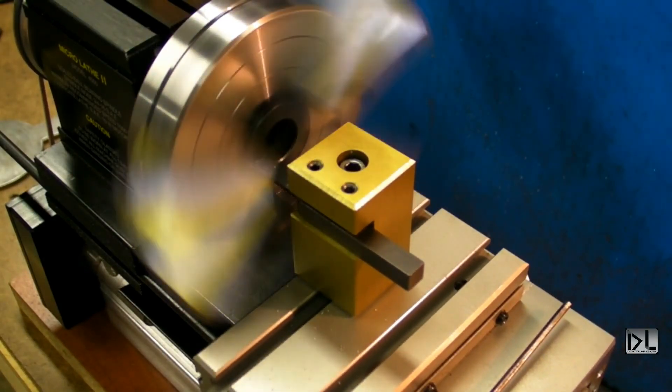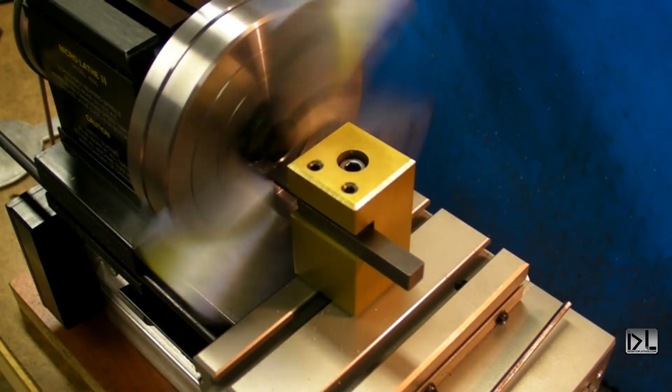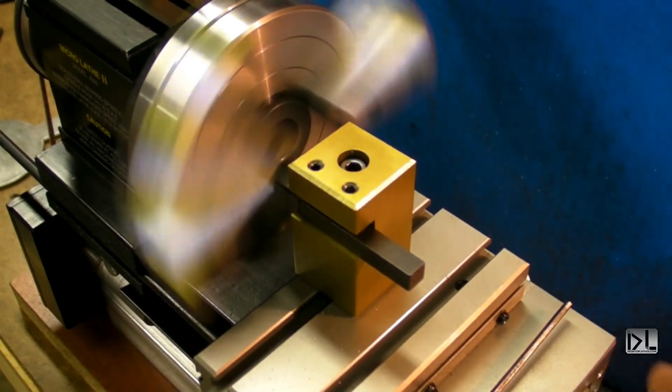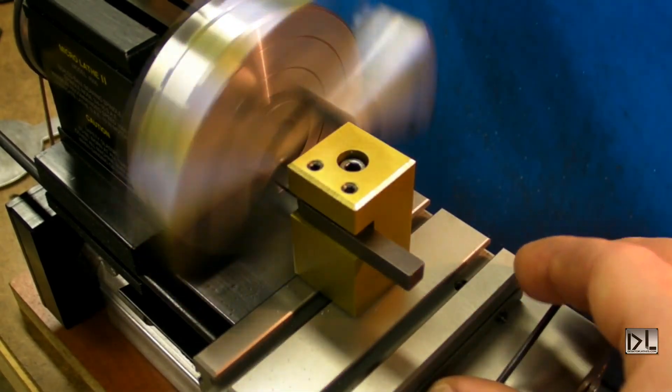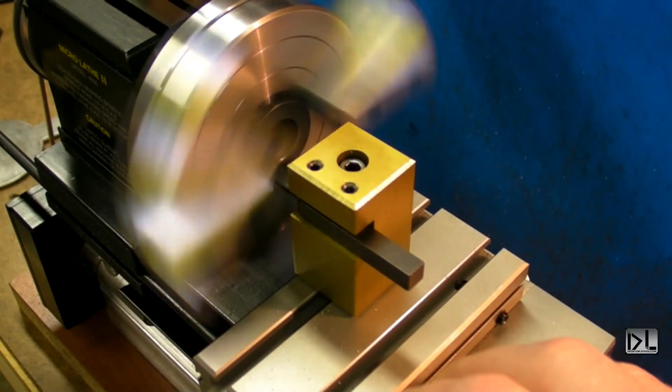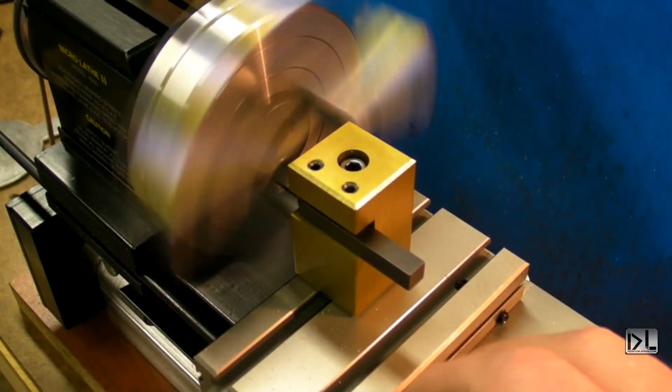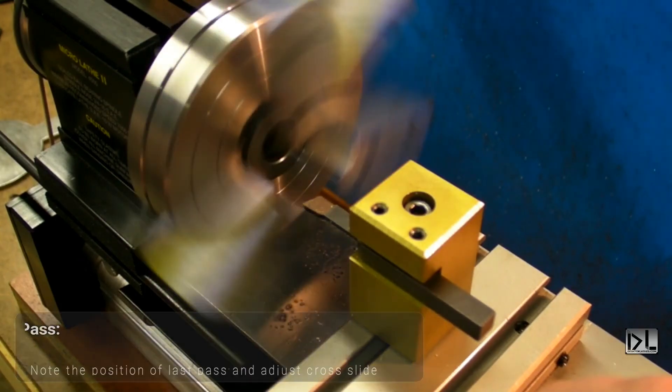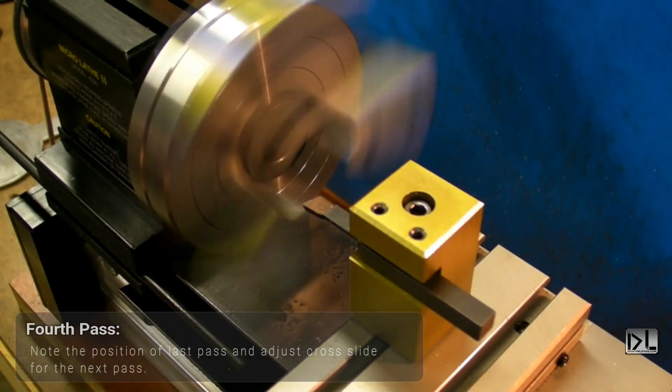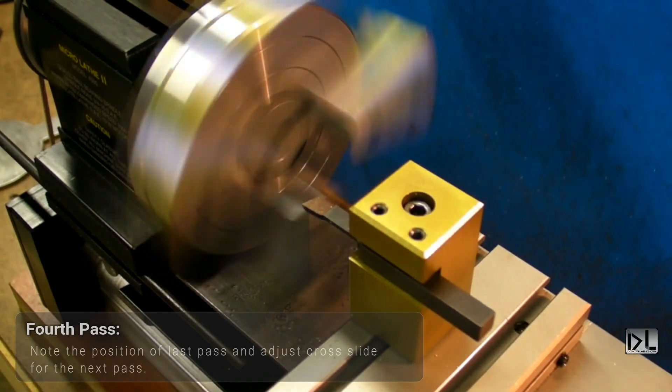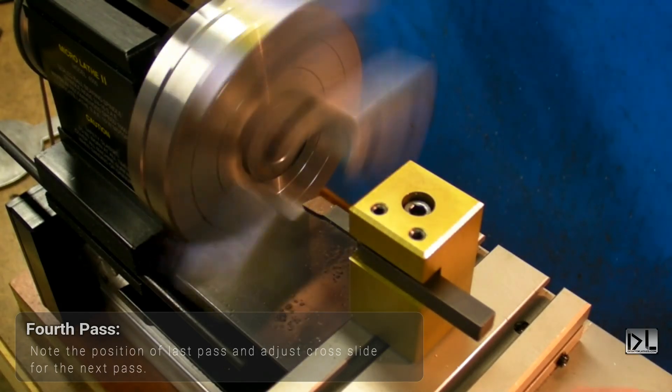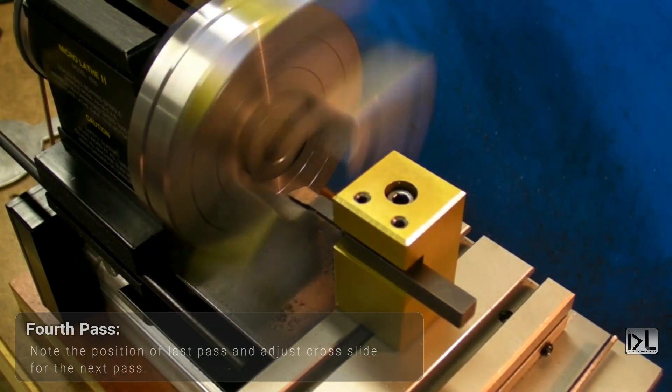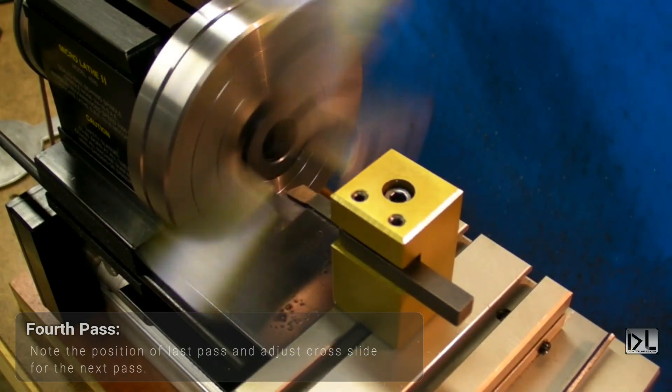Okay, we're bottomed out again. I'm noting that I'm on the number forty-seven. So I'll unlock the cross slide, move away from the material, move the carriage back, go back to forty-seven. And I'll go another five thousandths which puts me at forty-two. Relock the cross slide and here we go again for the fourth pass.